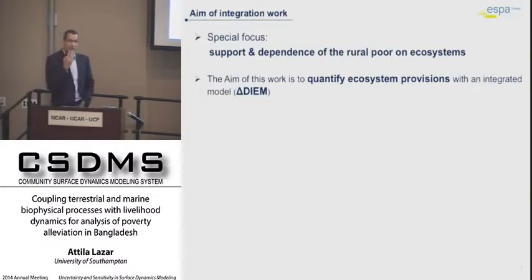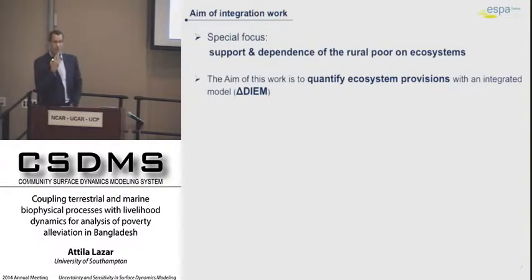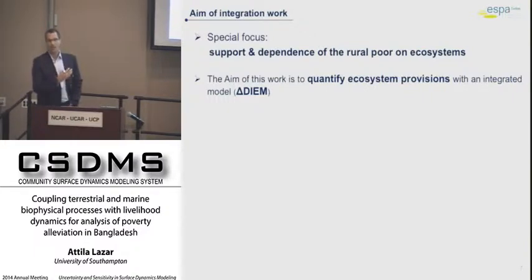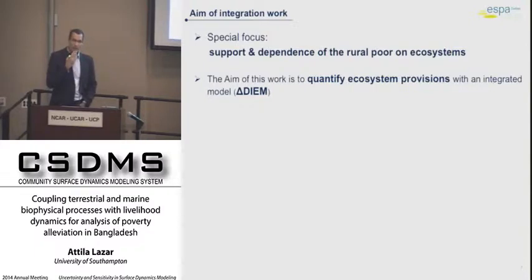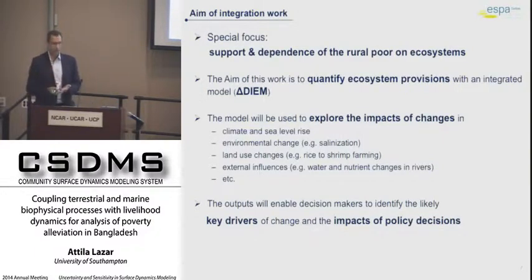We have a special focus and a hypothesis within this project: that rural population in Bangladesh is highly depending on the ecosystem services. The quality of the environment, which they actively modify, is affecting their livelihoods. That's the hypothesis we would like to test with this integrative tool and predict what is going to be the impact of any change in the system.